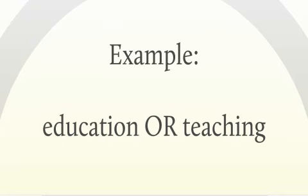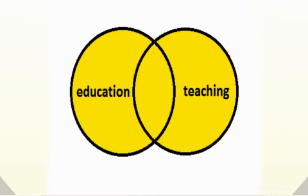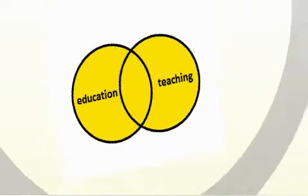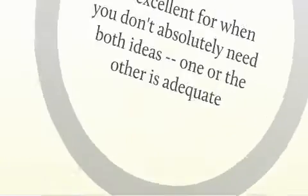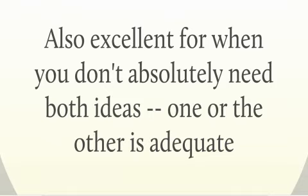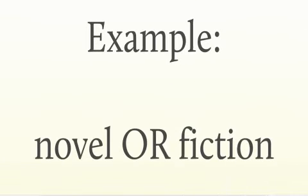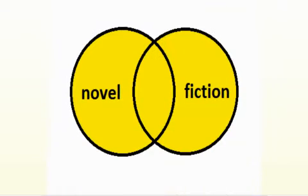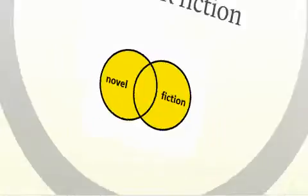For example, 'education OR teaching' will retrieve all of the results that contain education, that contain teaching, and that contain both. It's also excellent for when you don't absolutely need both ideas and one or the other is adequate for your research. For example, 'novel OR fiction' is a nice broad search to get you started if your research is in this vein.